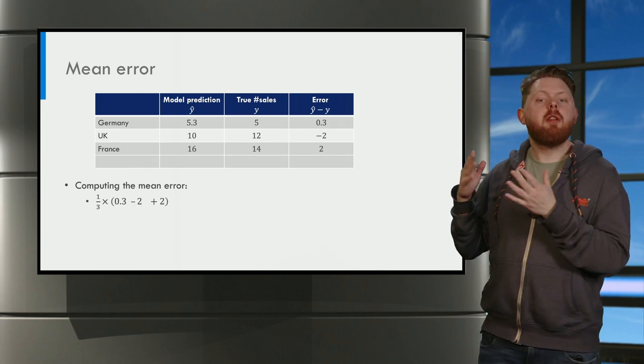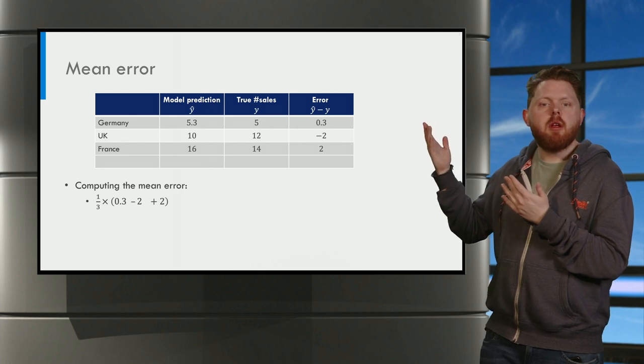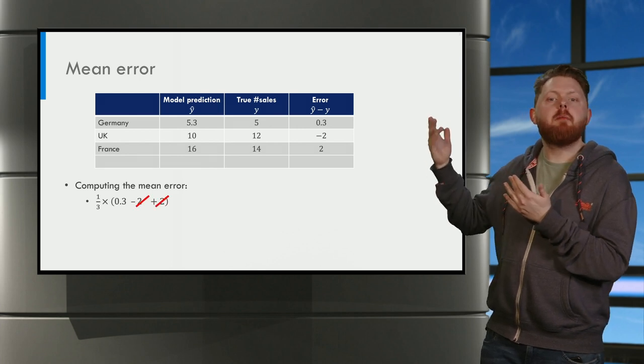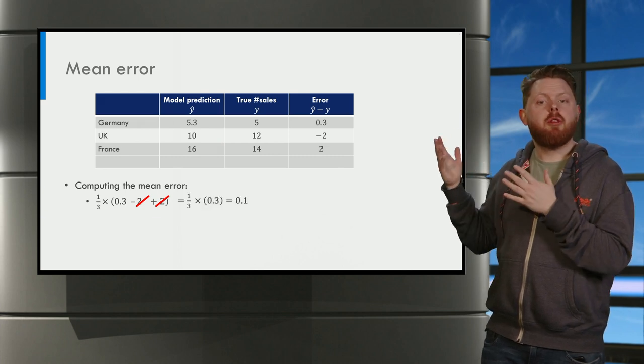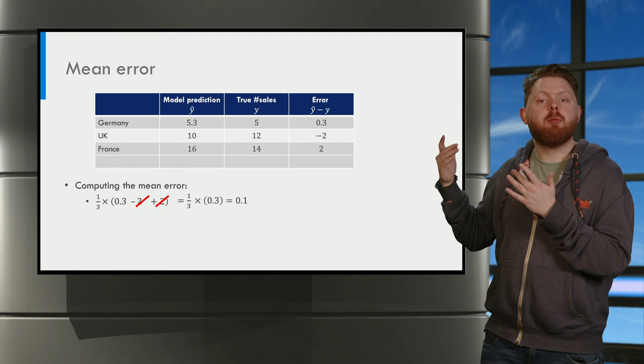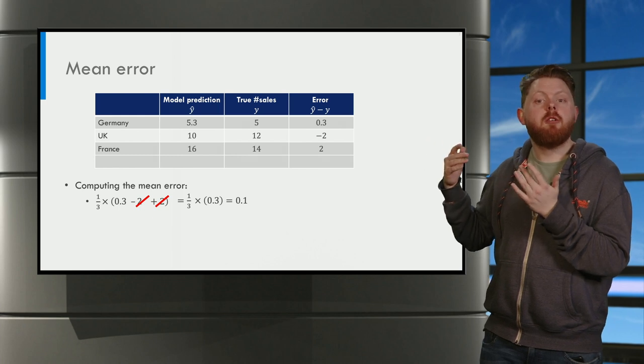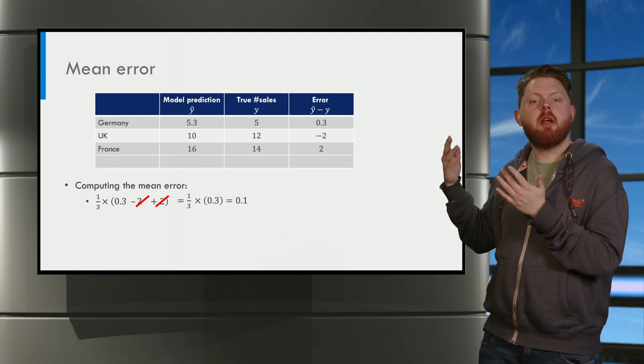I have written down the computation here and we can see that the minus 2 and plus 2 cancel. So we get 1 over 3 times 0.3, or 0.1, as the mean error.